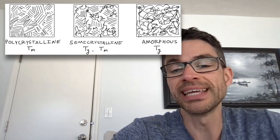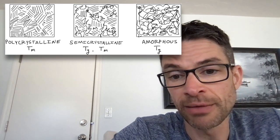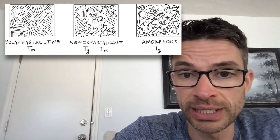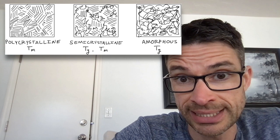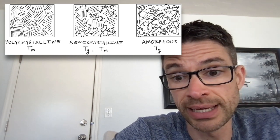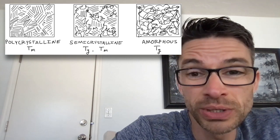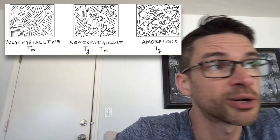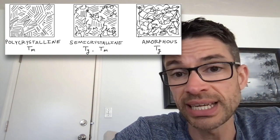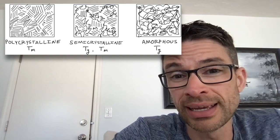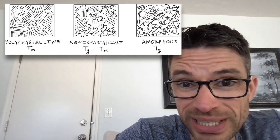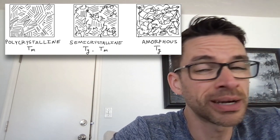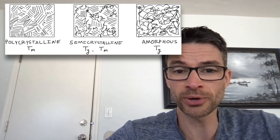Finally, we have an amorphous material. An amorphous material has a molecular structure which doesn't allow for complete ordering into crystallites, so the amorphous material has only a TG. Consider polystyrene — like styrofoam, a plastic drinking cup, or a plastic petri dish — which has just a TG, because there's something about its structure that doesn't permit the ordering.